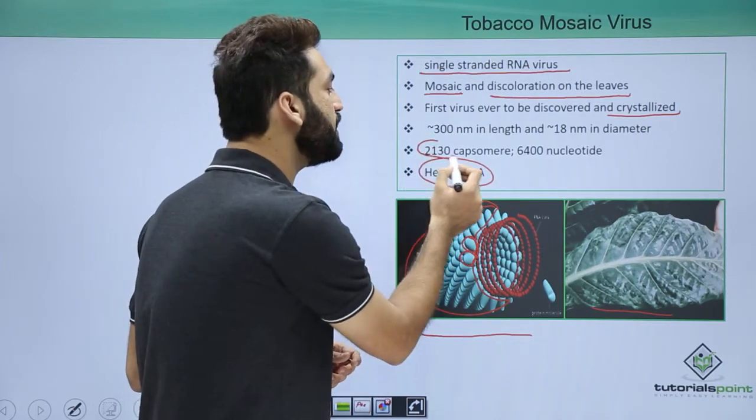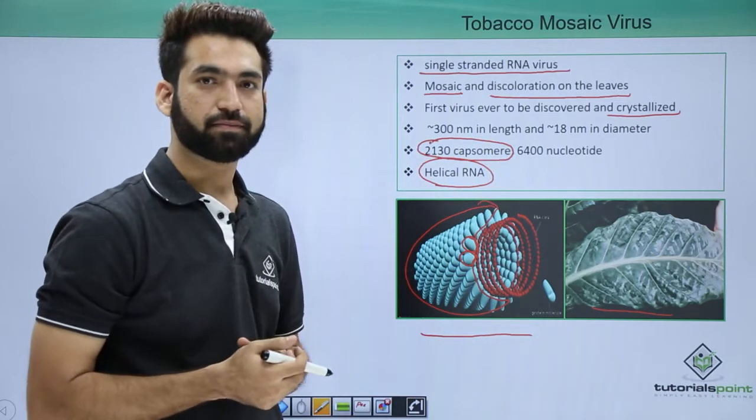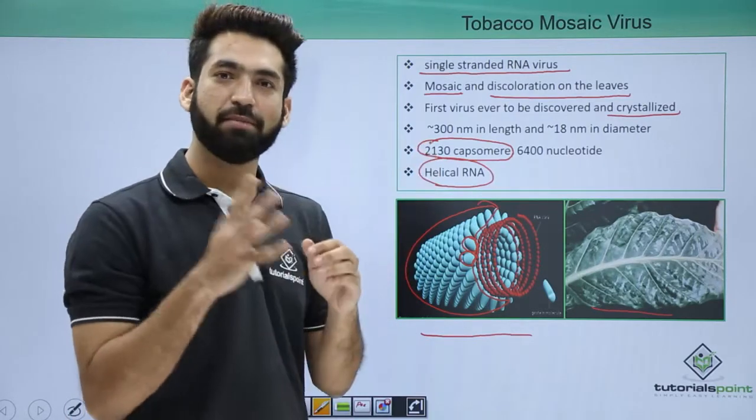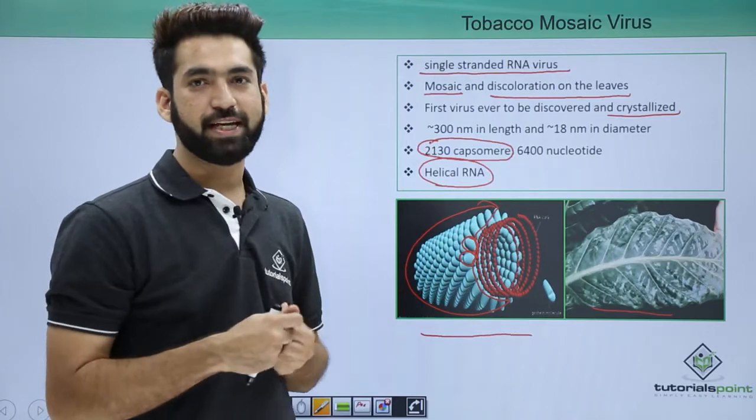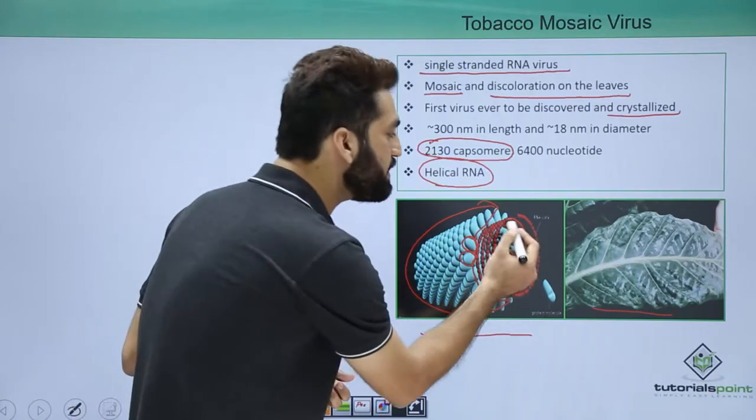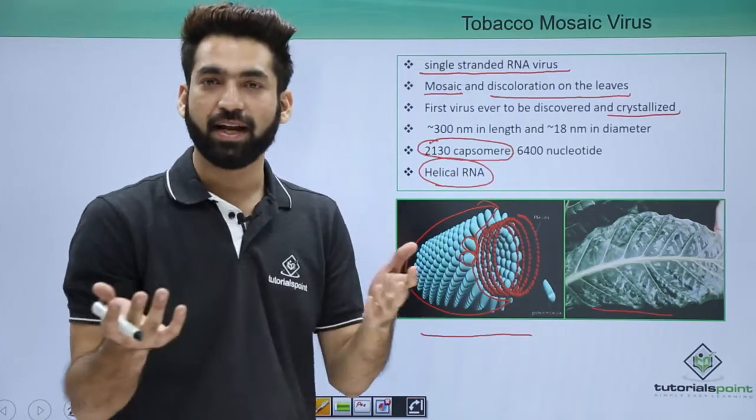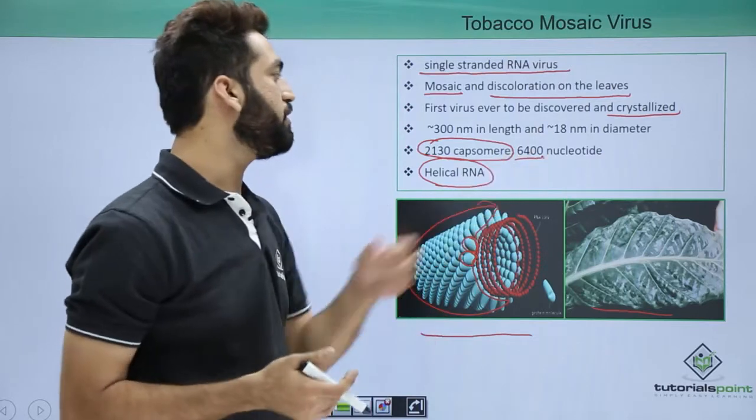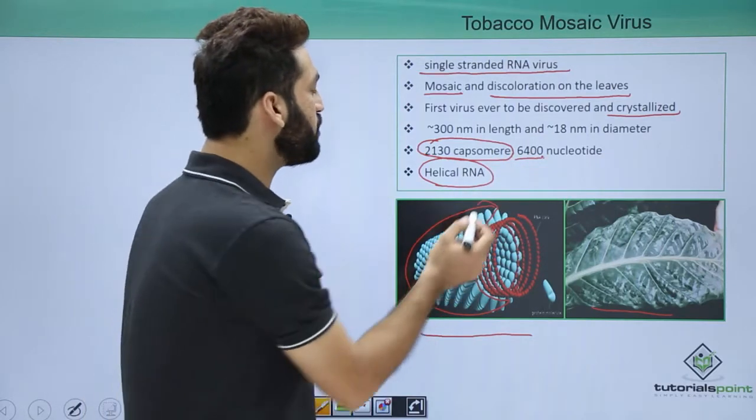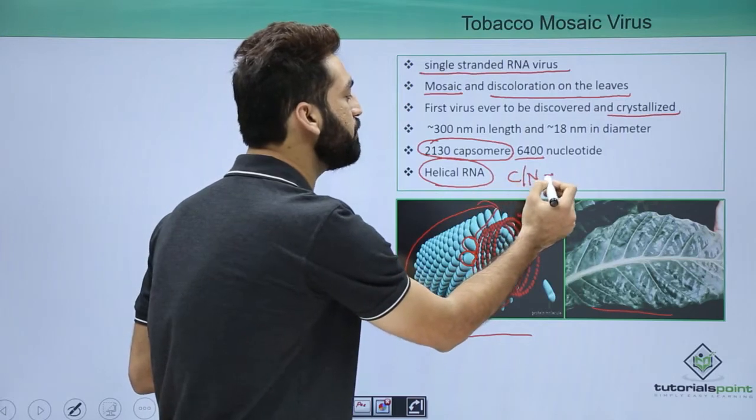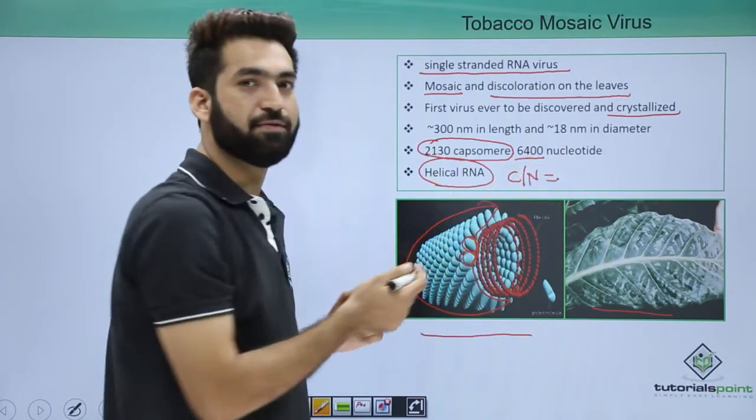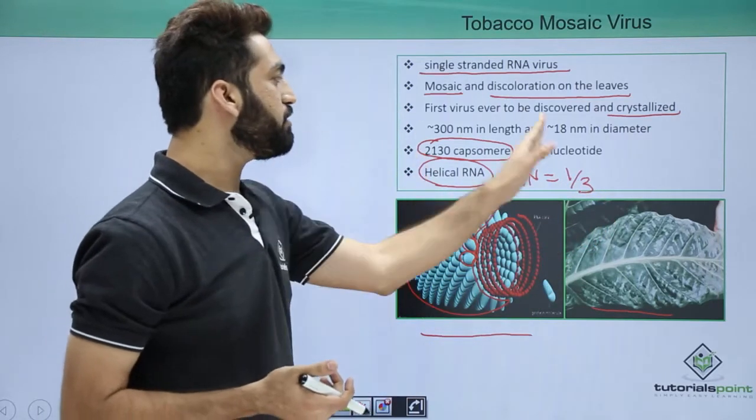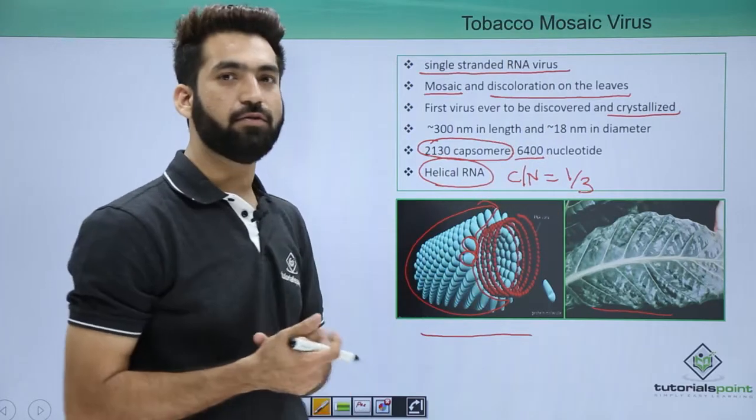So you have around 2130 capsomeres present. The capsomeres are making capsid. 2130 capsomeres are arranging and making the capsid of TMV. When you talk about this RNA, RNA is nucleic acid and nucleic acids are the polymers of nucleotides. So around 6400 nucleotides are present. If you want to calculate the capsomer to nucleotide ratio, it will be around 2130 upon 6400. It would be around 1 to 3. Remember, capsomer to nucleotide ratio in TMV virus is around 1 to 3.